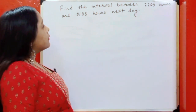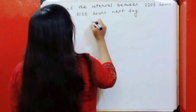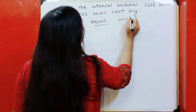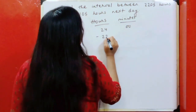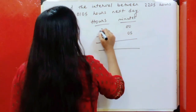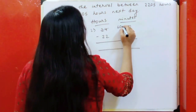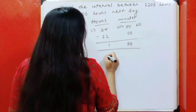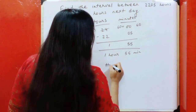Find the interval between 22:05 hours and 01:05 hours the next day. There will be two parts to this sum. In the first part, we subtract from 24:00 minus 22:05. I've borrowed one from 24, making it 23, and added 60, making it 60. The result is 1 hour 55 minutes.